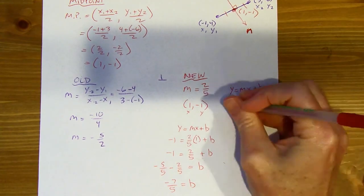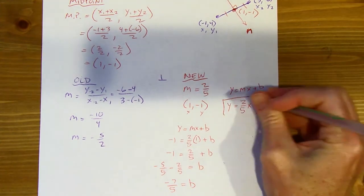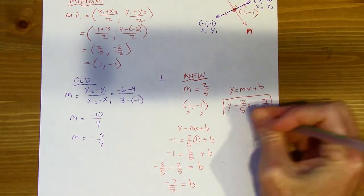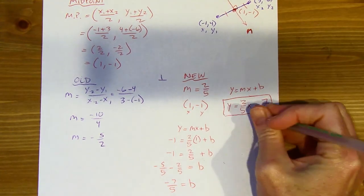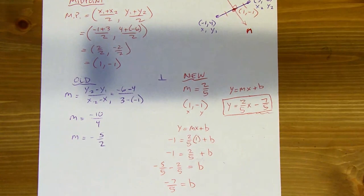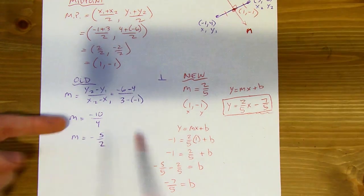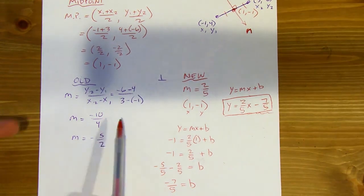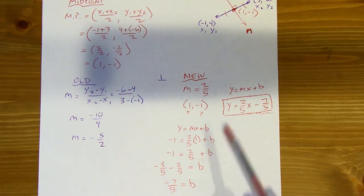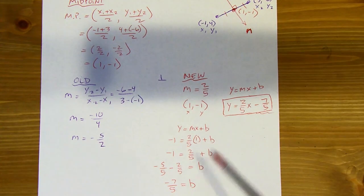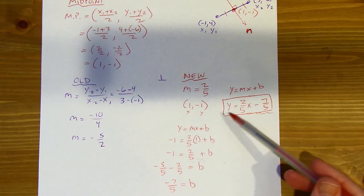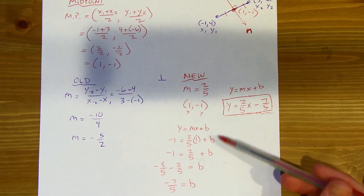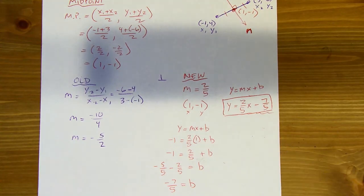Now I can finish writing the equation: y equals 2 fifths x minus 7 fifths. I found the slope using the old slope and the opposite reciprocal relationship, then found the y-intercept by plugging everything into y equals mx plus b. And that is it for today.